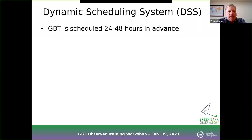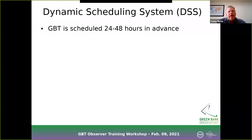The dynamic scheduling system is what we use to schedule the GBT. The basic goal is that we schedule the telescope 24 to 48 hours in advance. Why such short notice? Because weather predictions are only good out to about three days — trying to forecast further out is really difficult and you wind up scheduling things at inappropriate times. So 24 to 48 hours in advance gives people notice to prepare for their observations while we can still be fairly certain what the weather conditions will be — it's a balance between those two.